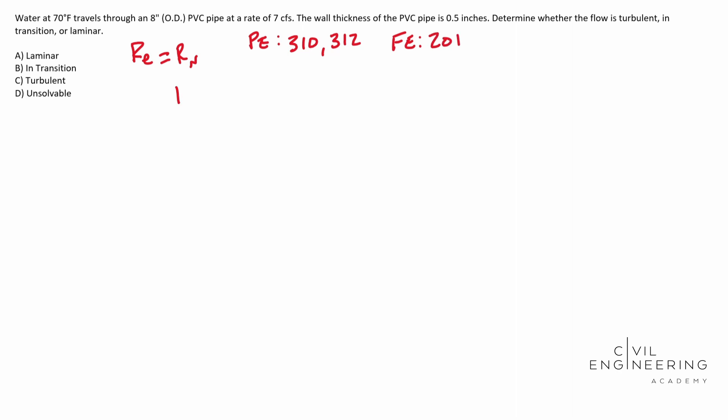We need to solve for the Reynolds number for this problem. So RE is equal to your velocity times your inside diameter over your kinematic viscosity. And so two of these things we basically already know.